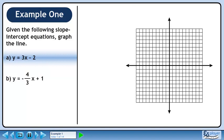In part A of this example, we are given the slope-intercept equation y equals 3x minus 2 and we are asked to draw the graph.